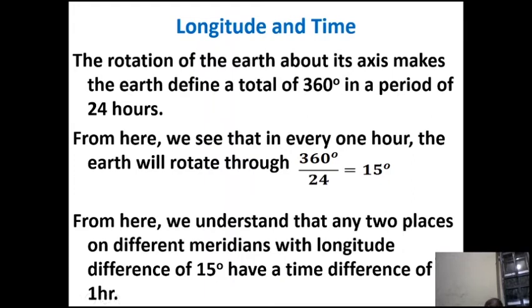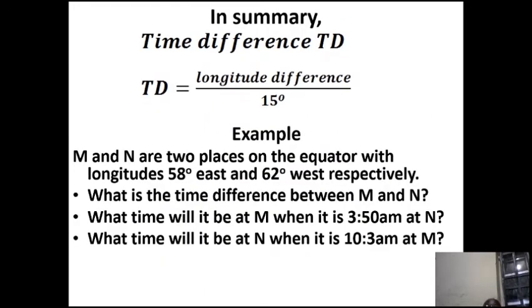That's why Nigeria is one hour ahead of the Greenwich Meridian — when it is 12 o'clock in London, it is 1 o'clock in Nigeria. By formula, time difference TD equals the longitude difference between the two places divided by 15°. If you want the time difference between two places, check the longitude difference divided by 15°, and whatever you get in hours or fractions becomes the time difference.